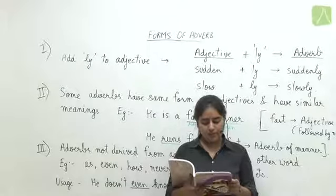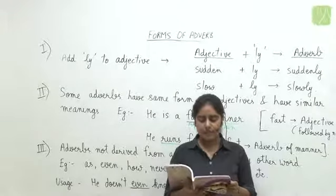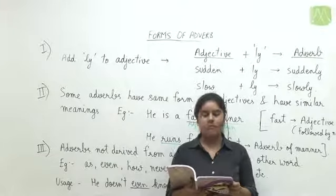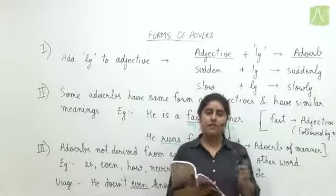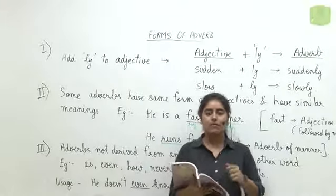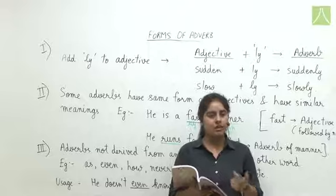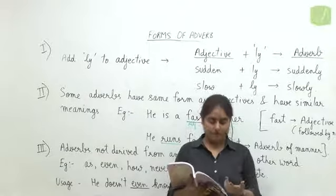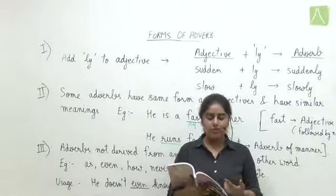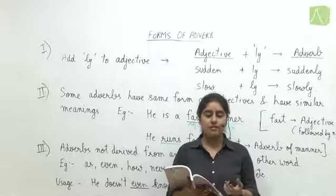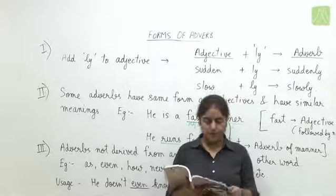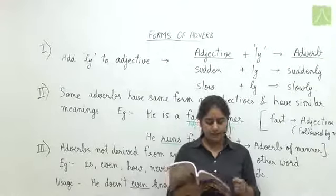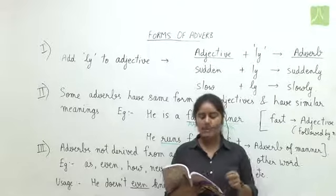Question number three: 'The ballerina put on her shoes and danced gracefully.' Identify the type of adverb of the highlighted word. 'Gracefully' is highlighted. It is telling us the manner — how she danced. She danced gracefully, so it is adverb of manner. Option C is correct.